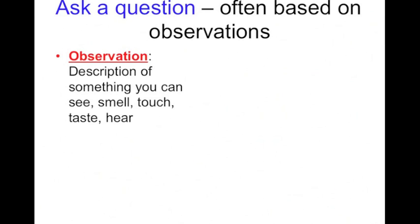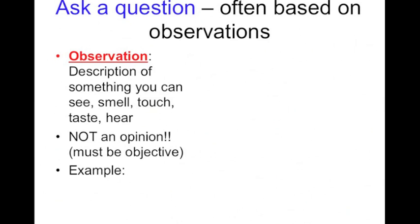Ask a question. Questions are usually based on observations we make. We see something and then we have a question about it. So it's important to understand what an observation is. An observation is a description of something you can see, smell, touch, taste, or hear. You're using your five senses to describe something. It's very important to understand that observations are not opinions. They have to be objective, meaning any person could walk in a room and see what you're seeing and say that same thing.